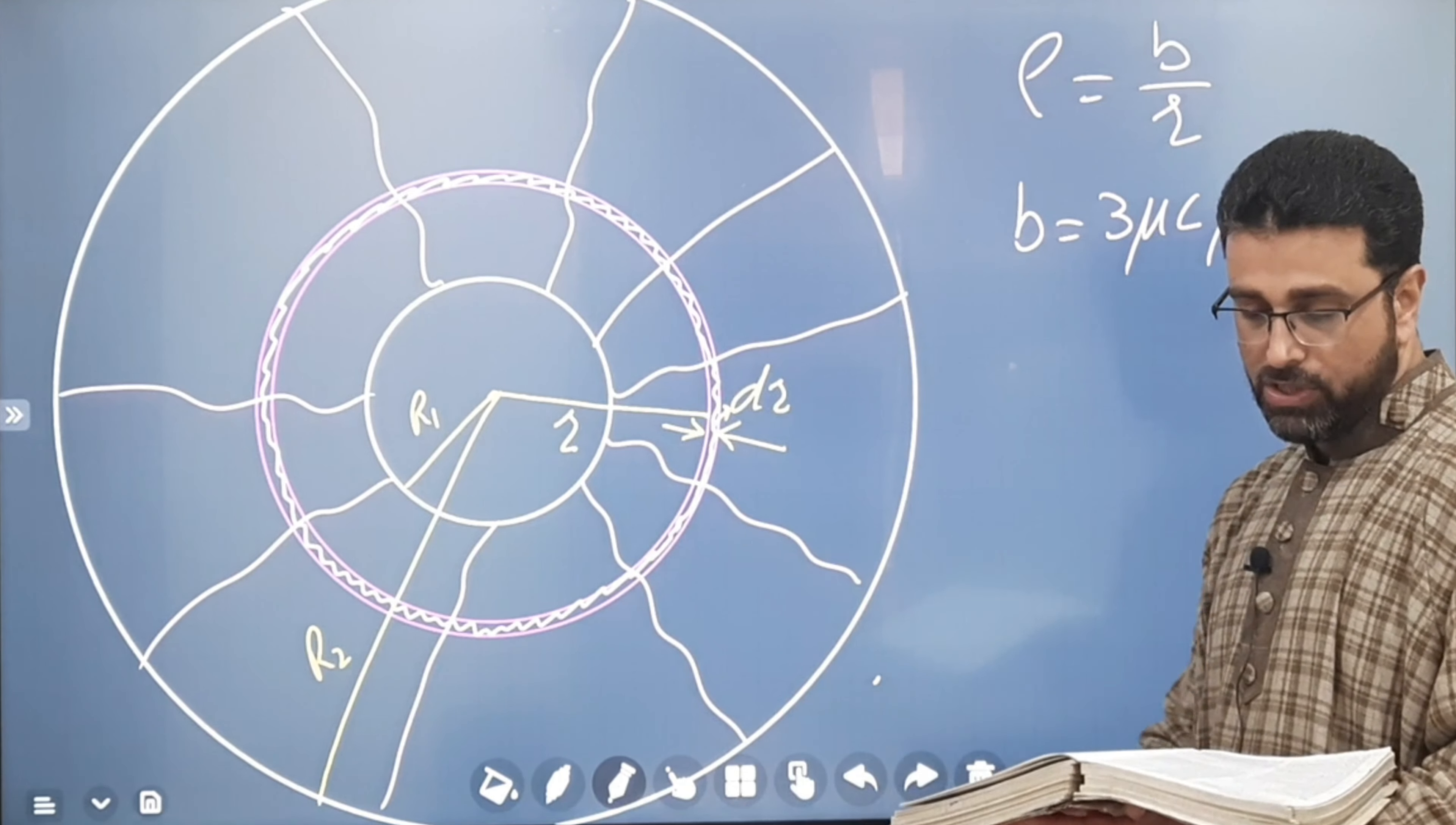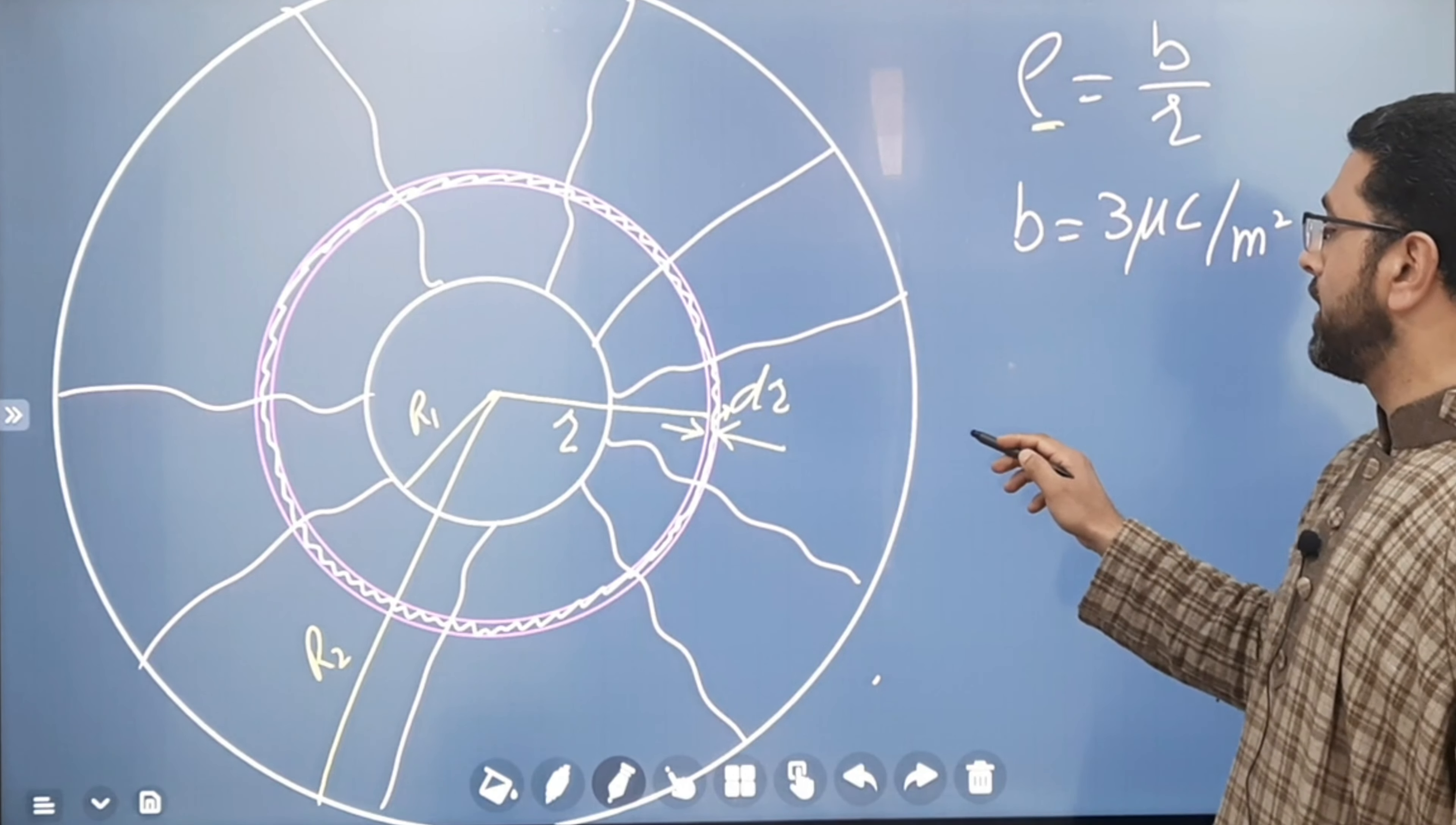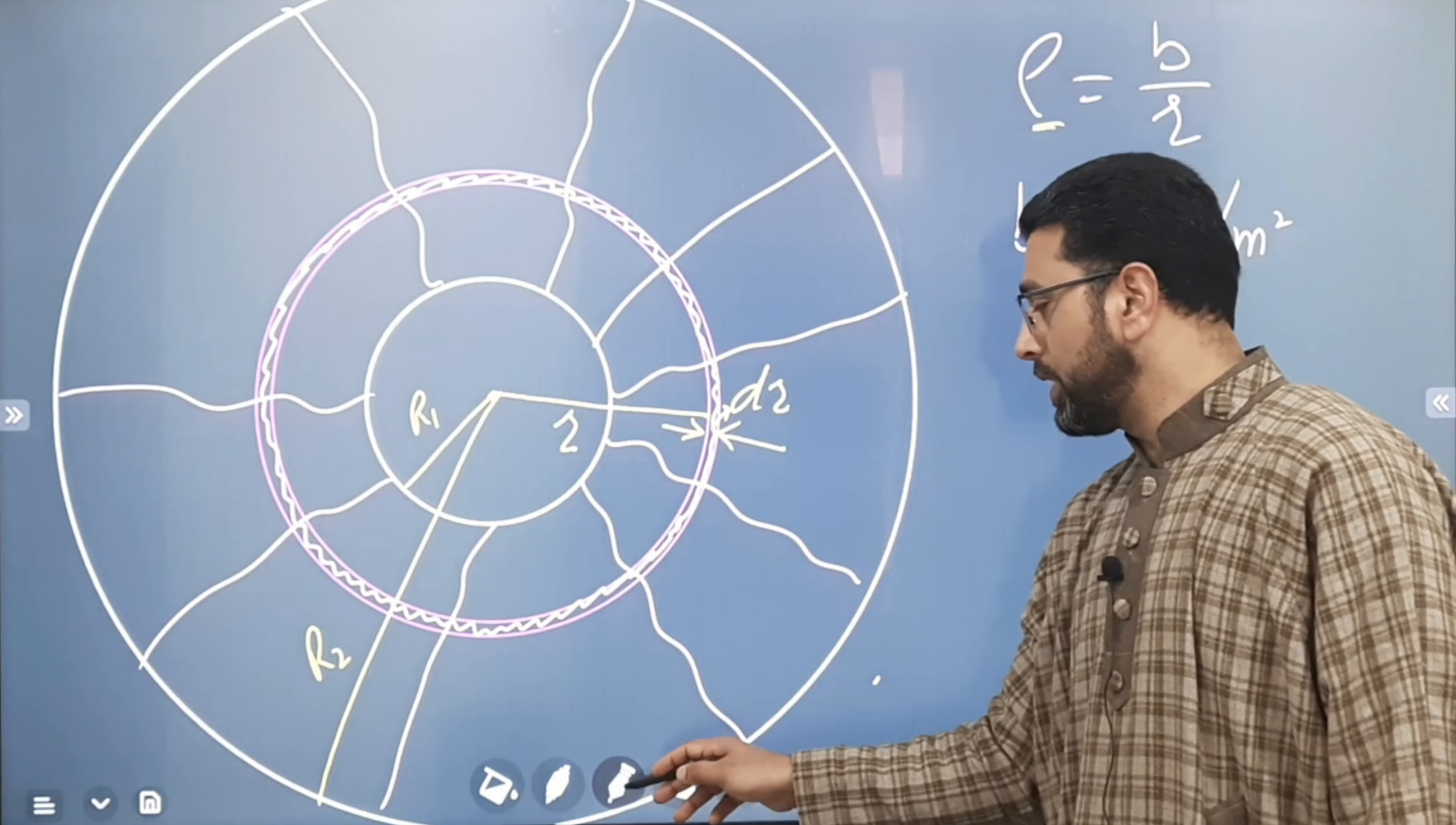What is the net charge in the shell? Okay, so we just have to find out total charge. Had this density been constant, we could have directly written Q equals total charge equals density into volume. But this density is not uniform. It is not constant. So we have to take help of integration.